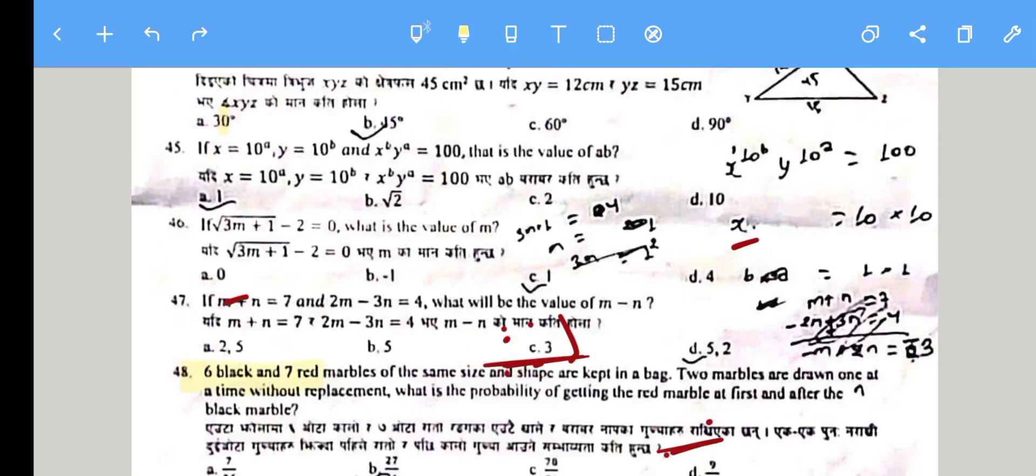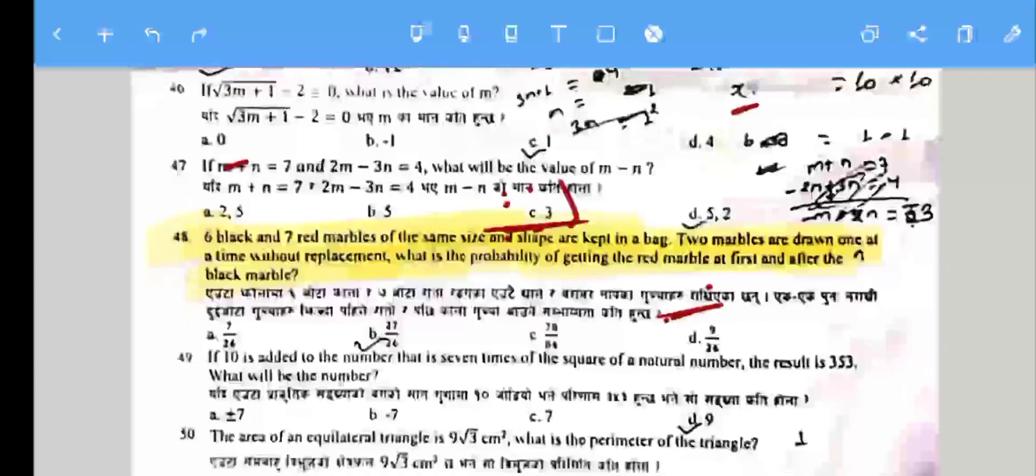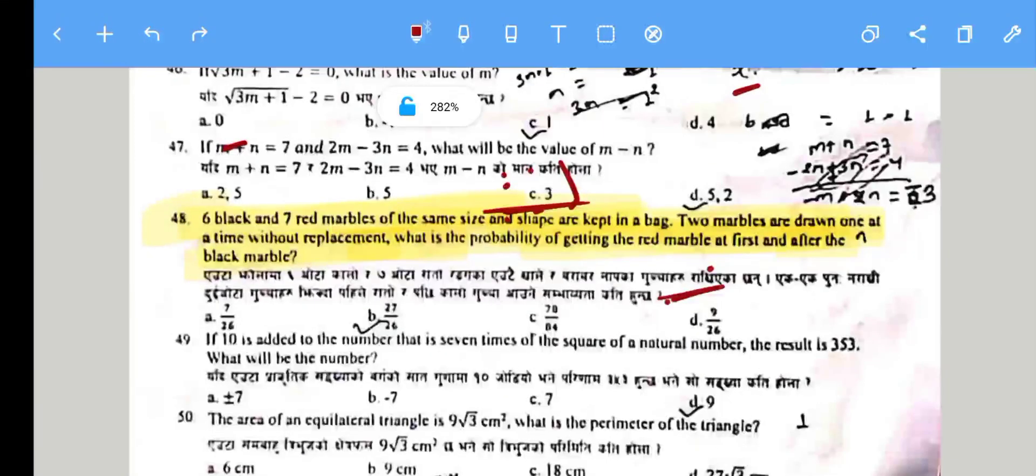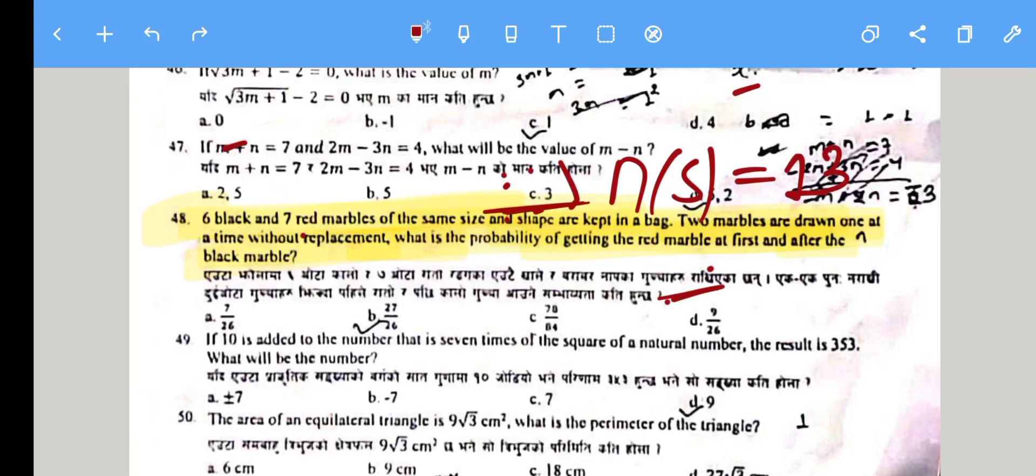Question 48/49: 6 black and 7 red marbles of the same size and shape are kept in a bag. Two marbles are thrown at a time without replacement. What is the probability of getting a red marble first and then a black marble?